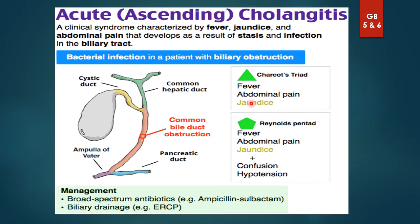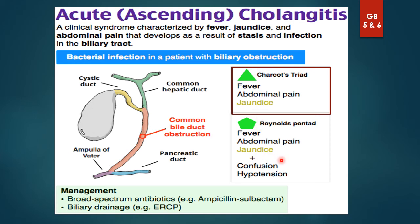Ascending cholangitis is due to infection of the bile ducts from obstruction and stasis of bile, most commonly due to CBD stones. Patients develop fever, abdominal pain, and jaundice — Charcot's triad. If obstruction continues, Reynolds pentad develops — Charcot's triad plus confusion and hypotension — usually due to secondary bacterial infection. This may be an early sign of impending septicemia and shock.